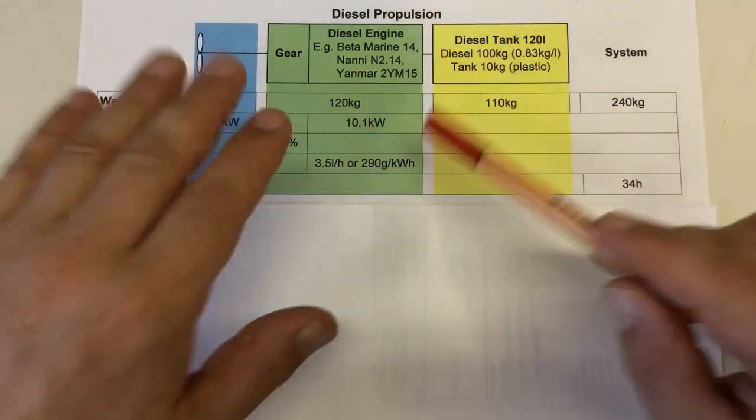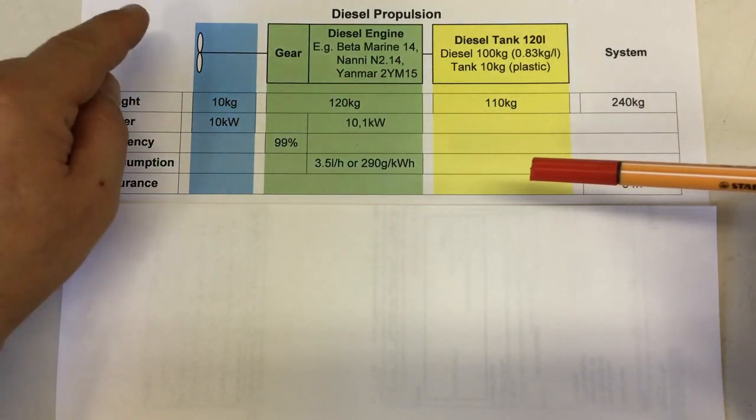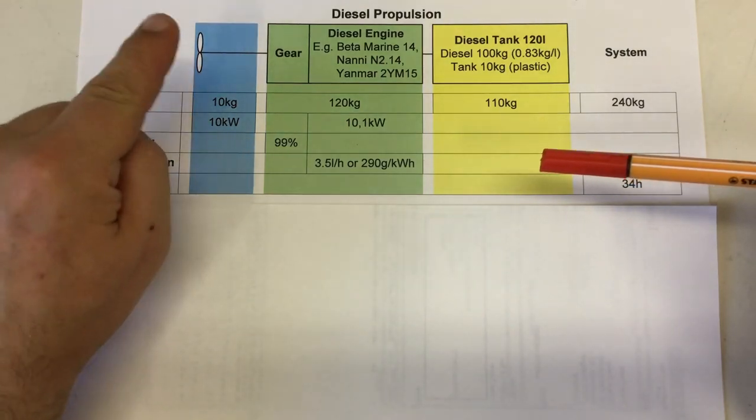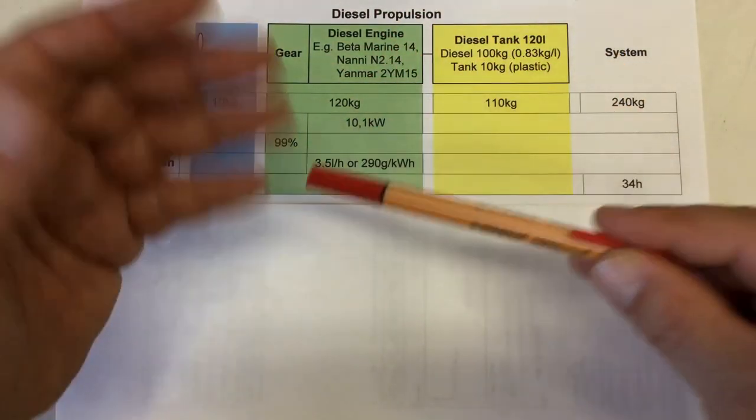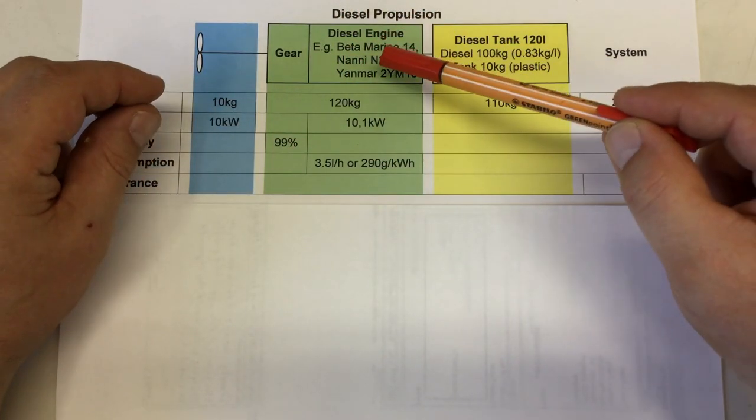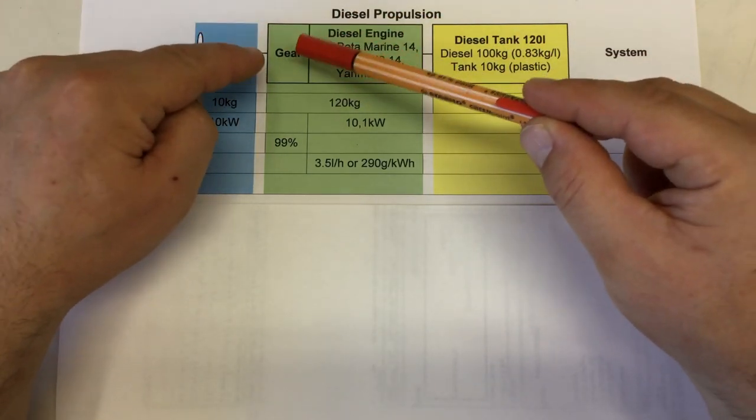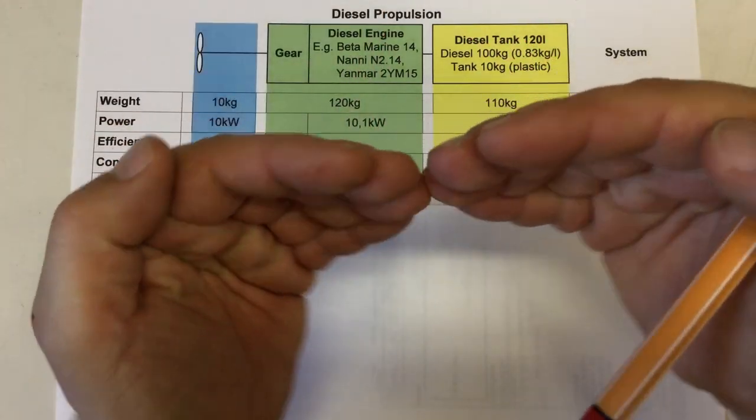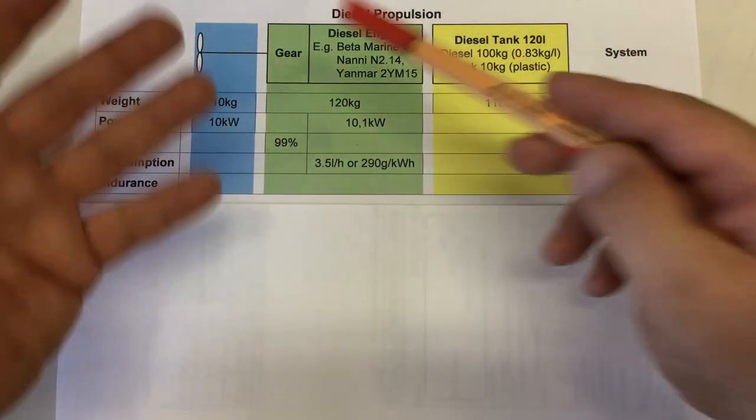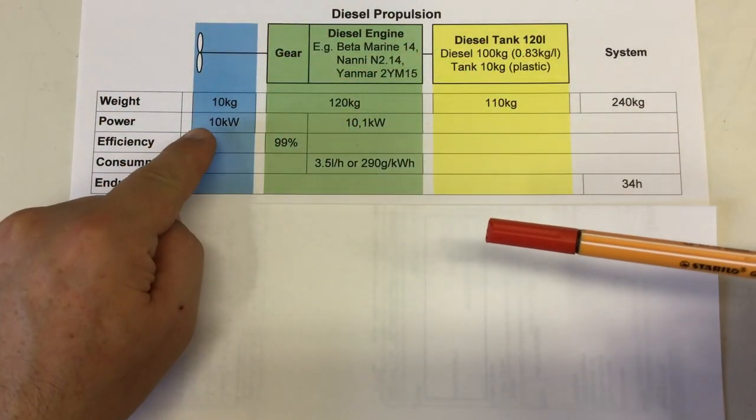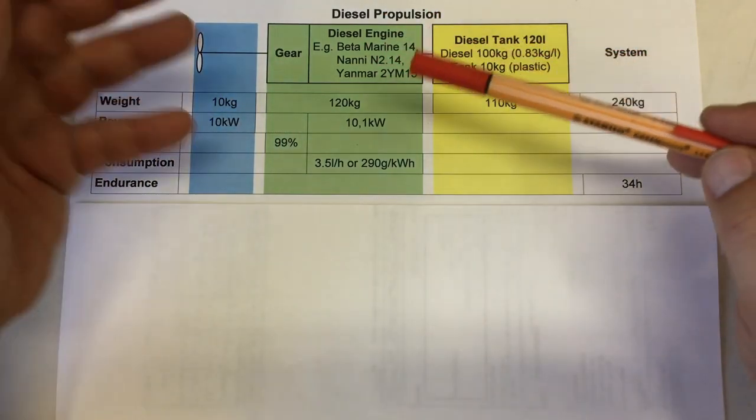Let's start with the propulsion system we all know and love, the diesel engine. I want to have at full ahead 10 kilowatts at the prop. Usually these smaller engines run quite fast, with 3000 to 3600 RPM, so the shaft is connected via a reduction gearbox to the engine. These reduction gearboxes can be built very efficiently, let's say 99%. So to get our 10 kilowatts at the prop, we need 10.1 kilowatt out of the engine at full ahead.